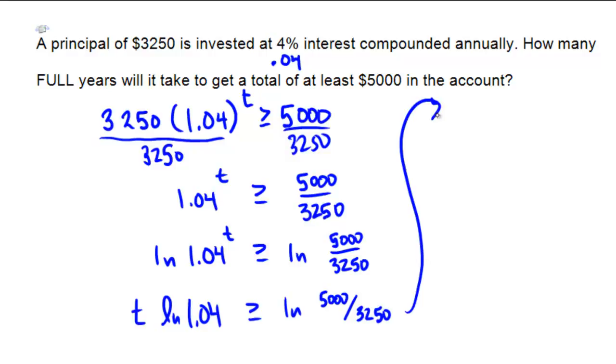So that would mean that after dividing both sides, we'd now have the T would need to be bigger than or equal to ln of 5,000 divided by 3,250, all over ln of 1.04.